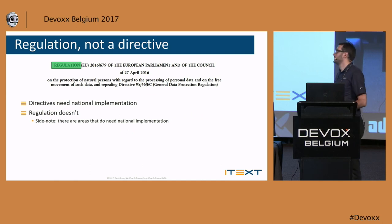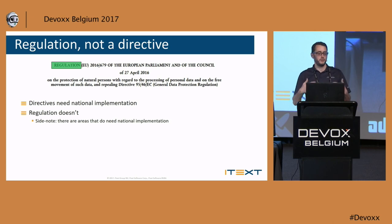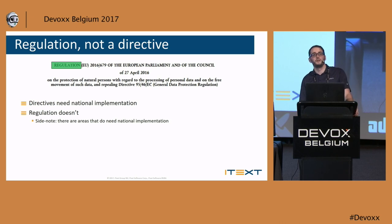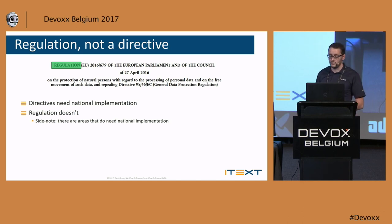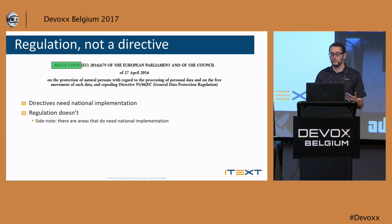The first thing is the word 'regulation.' People familiar with EU legislation know that usually the EU sets out directives, which need national implementation. You can compare it to an interface in Java — the EU sends out the interface and every country needs to implement it. The GDPR is a regulation, not a directive. That means it goes into effect now, it doesn't need any national implementation. There is a small side note: some areas do need national implementation, like national security.